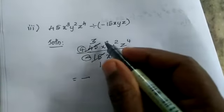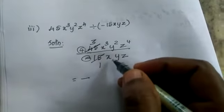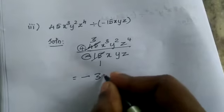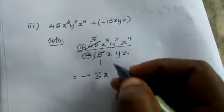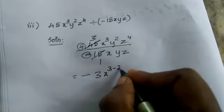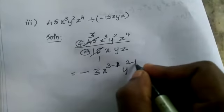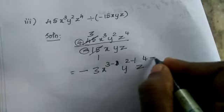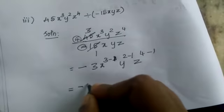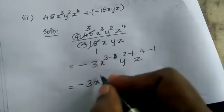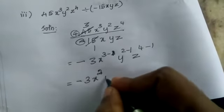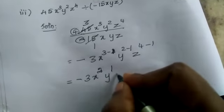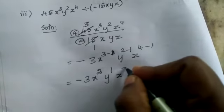Now we are subtracting the variable powers. x is 3 minus 1, y² is 2 minus 1 equals 1, z⁴ is 4 minus 1 equals 3. This is the answer: -3x²yz³.